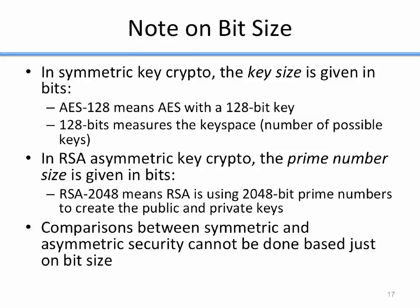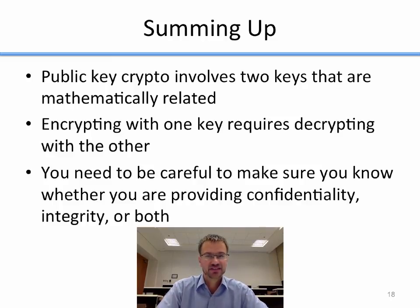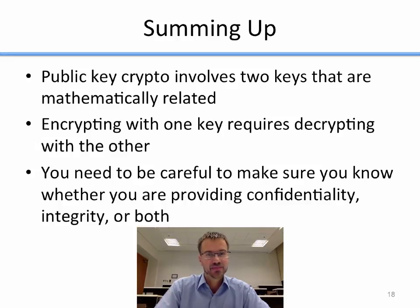Sometimes shady companies claim their product is more secure because it uses RSA with 4096 bits versus AES with 128 bits — but that's nonsense, because you can't directly compare them; they're totally different measurements. To sum up: public key crypto involves two mathematically related keys, and when you encrypt with one you must decrypt with the other. You need to be careful to ensure you know whether you're providing confidentiality, integrity, or both. This lecture showed how to use public key cryptography for each separately, but not both simultaneously — that may come up as an exercise.